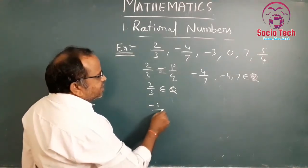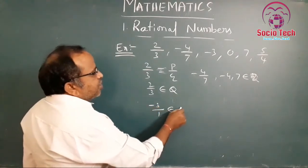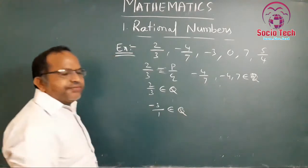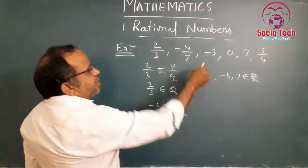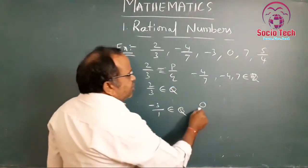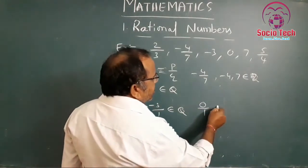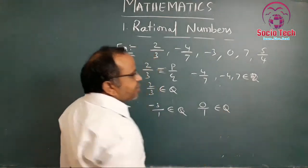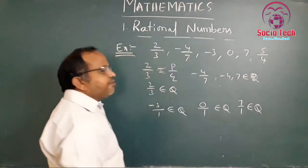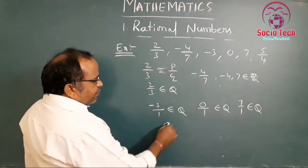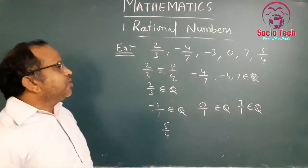-3 can be written as -3/1, which is in the form of p by q, so it is also an example of a rational number. Then 0 can be written as 0/1, also in the form of p by q, so 0 is also a rational number. Similarly, 7 can be written as 7/1, and 5/4 is directly in the form of p by q — all are rational numbers.